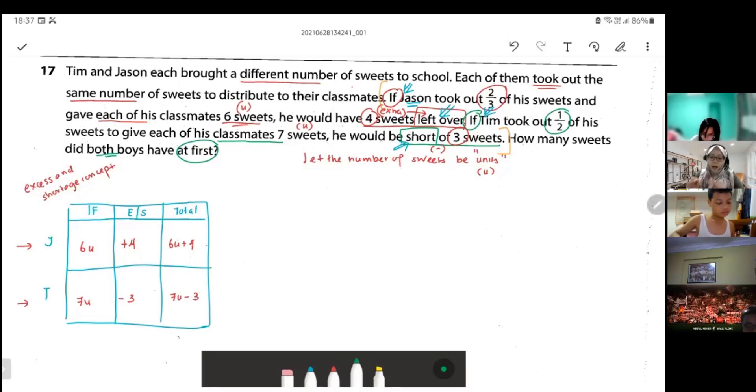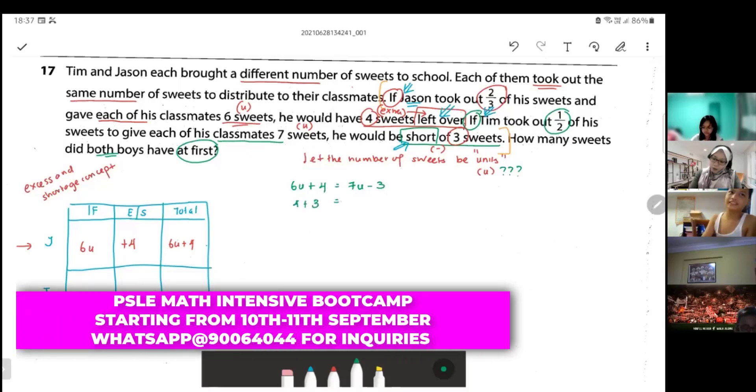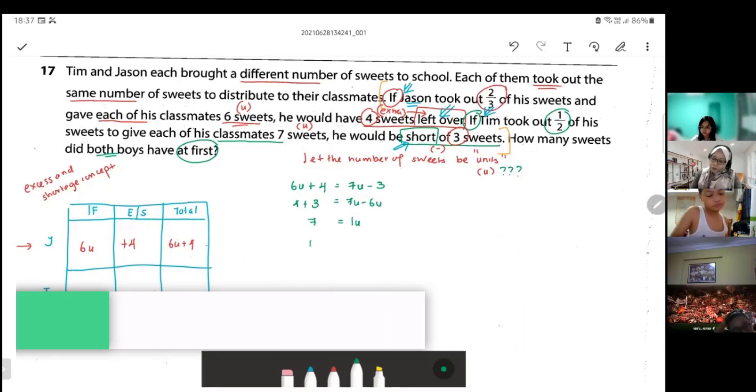What I want to do from this question is I just want to represent them to find what is one unit. Six unit plus four is equals to seven unit minus three. I just want to take out what is one unit, what is one sweet. This is my issue here, what is one sweet? We put all the numbers to one side and all the units to the other side. And this is what I get.